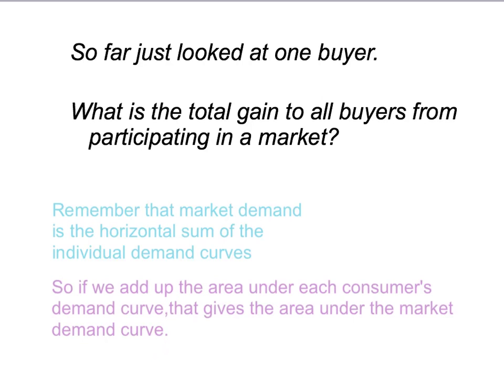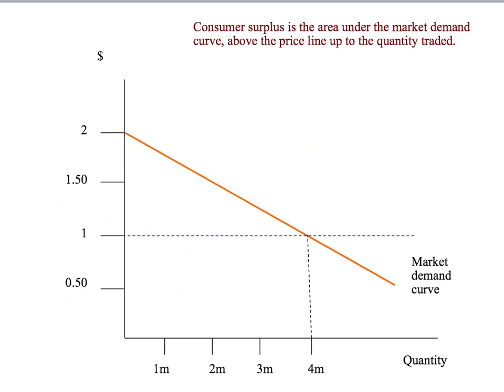So if we add up the area under each individual consumer's demand curve over all consumers, that simply gives us the area under the market demand curve. To get the total consumer surplus, we can just go to the market demand curve and look at the area under it, above the price, up to the total quantity purchased. This gives us the same number as if we looked at each individual demand curve and added it up — a shortcut to get the total gain to all buyers.